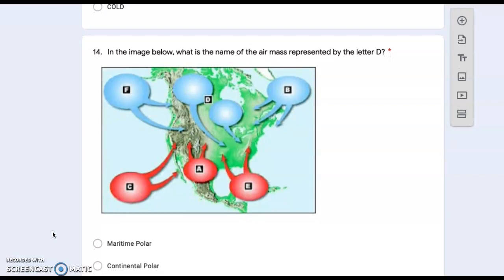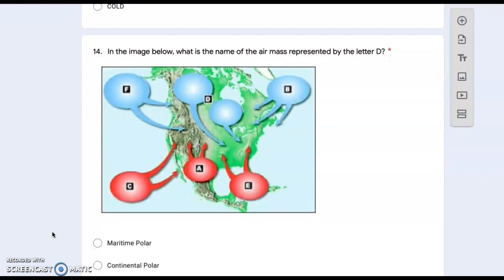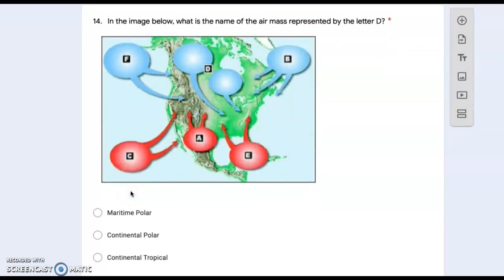Number fourteen: in the image below, what is the name of the air mass represented by the letter D? D is right here over land. Is that maritime polar, continental polar, or continental tropical?